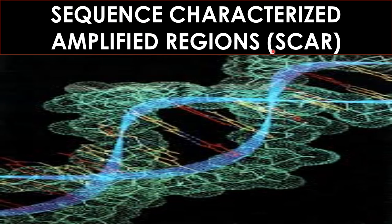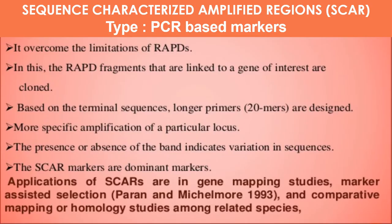Sequence Characterized Amplified Regions, also called SCAR, comes under PCR-based markers. It overcomes the limitations of RAPD. In this technique, the RAPD fragments linked to the gene of interest are cloned, and based on the terminal sequence, longer primers of 20-mers are designed. More specific amplification of a particular locus takes place. The presence or absence of the band indicates variation in sequence. SCAR markers are dominant markers. Applications of SCAR include gene mapping studies, marker-assisted selection, and comparative mapping or homology study among related species.